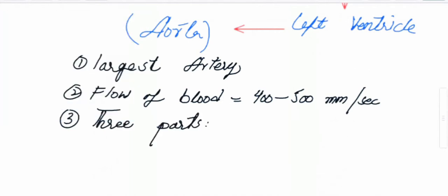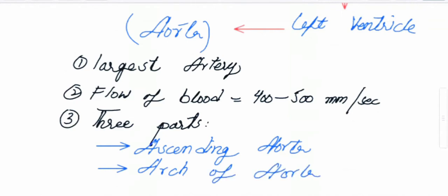Aorta has three parts: ascending aorta, arc of aorta, and descending aorta.